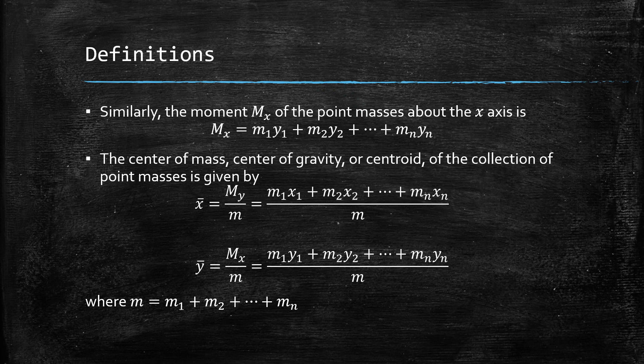The center of mass — also called the center of gravity or centroid — of the collection of point masses is given by x-bar and y-bar. The x-coordinate of the center of mass, x-bar, equals Mᵧ divided by m, where m is the sum of all masses: x-bar = (m₁x₁ + m₂x₂ + … + mₙxₙ) / m. The y-coordinate, y-bar, equals Mₓ divided by m: y-bar = (m₁y₁ + m₂y₂ + … + mₙyₙ) / m.